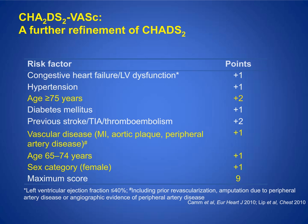In 2010, further refinement of the scoring system produced the CHA2DS2-VASc scoring system, which is more commonly used now. In this system, patients get two points for age greater than 75. You also get a point if you're female — females have a higher risk of stroke. There's also a point for vascular or coronary disease. The total maximum score is nine with this system.